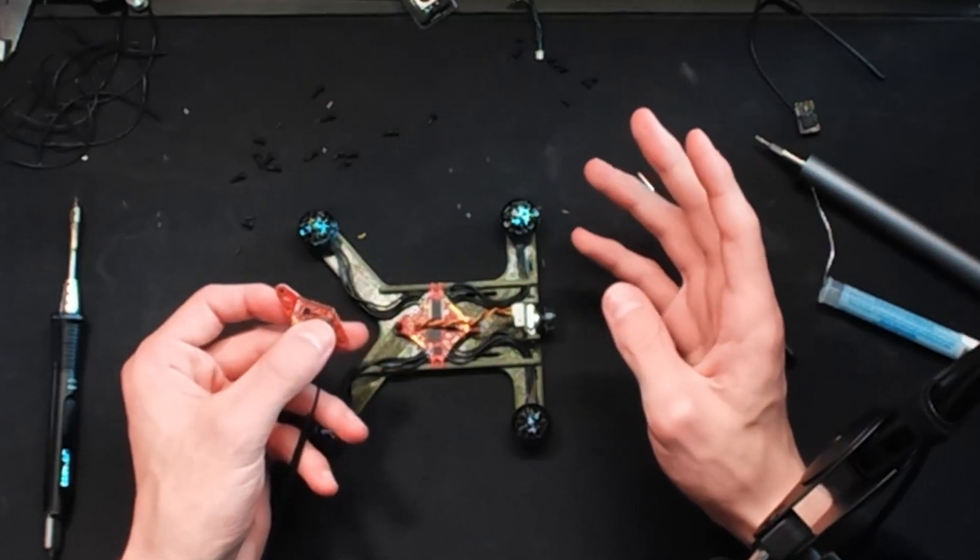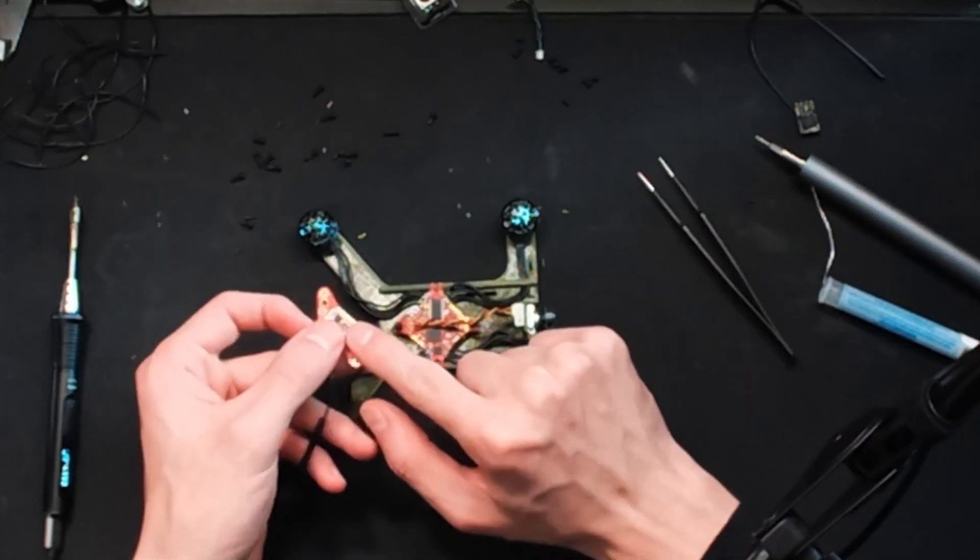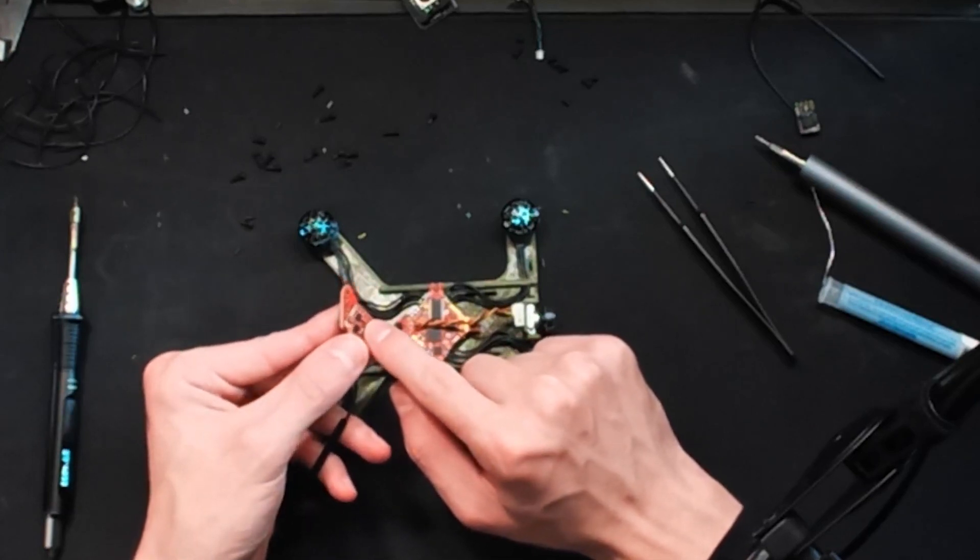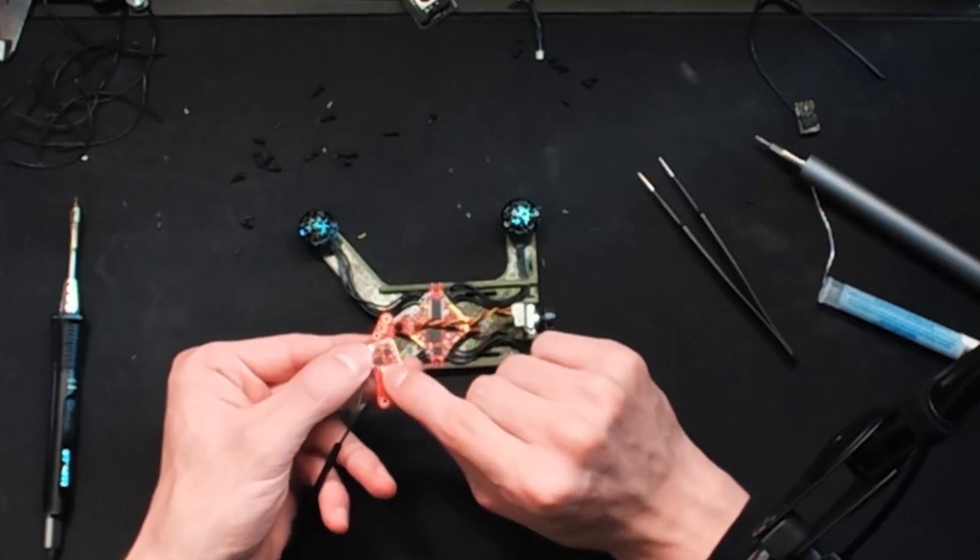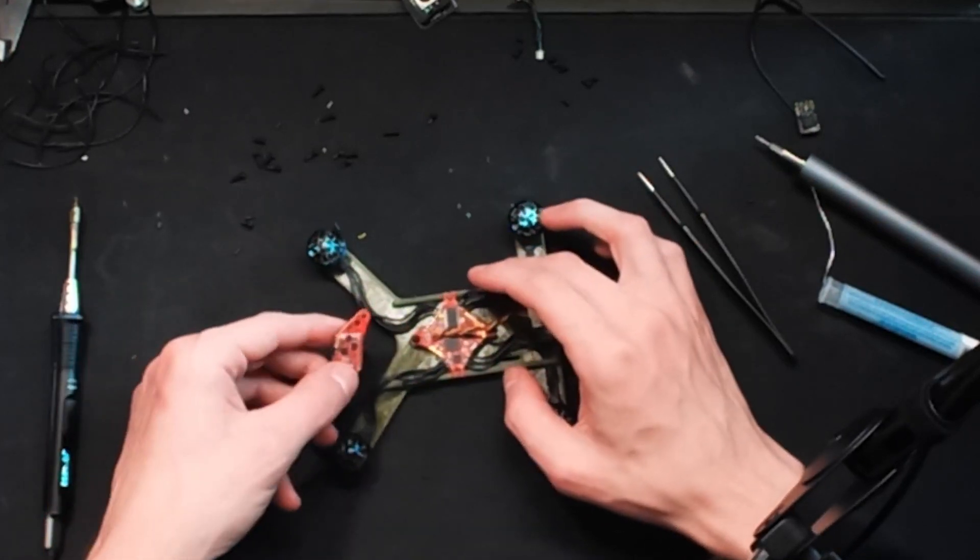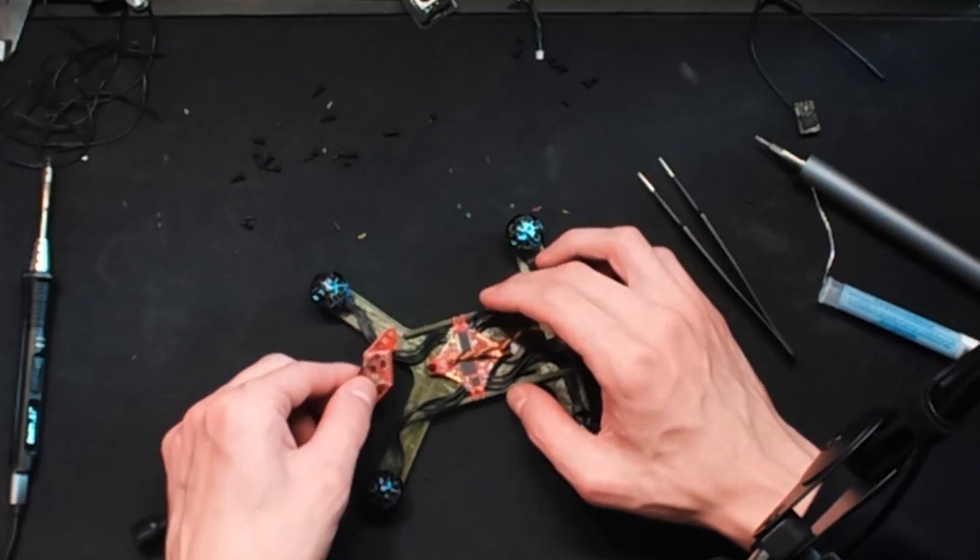But this will give you an active connection from the flight controller to the video transmitter so that you can change your powers, what channel you're on, and so on, without having to reach in and press the function button. I find this very useful in all the drones I've used it on, so I'm going to make sure that is all wired up here.